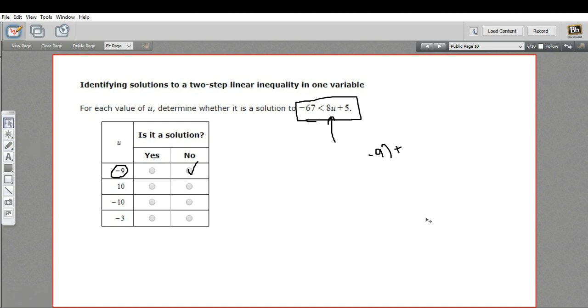Let's try another. We've got 10 next, a positive 10. I can see this is going to work already because 8 times 10 is 80 plus 5 is going to be 85. Any positive number is greater than negative 67. So negative 67 is less than 85. So that works.